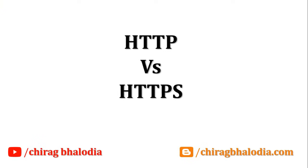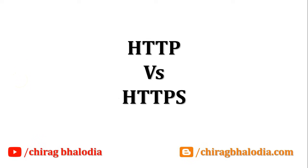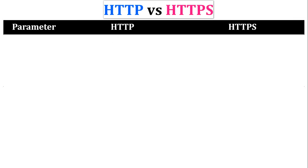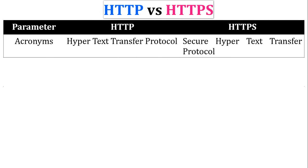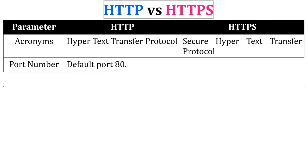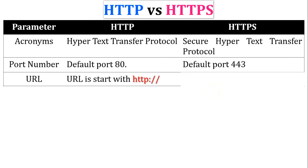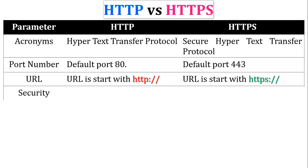The next topic is HTTP versus HTTPS, compared using different parameters. First, acronyms: HTTP stands for Hypertext Transfer Protocol, while HTTPS stands for Hypertext Transfer Protocol Secure. For port numbers, the default port of HTTP is 80 and HTTPS is 443. For URLs, HTTP URLs start with 'http://' while HTTPS URLs start with 'https://'.